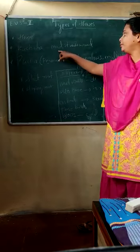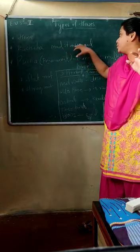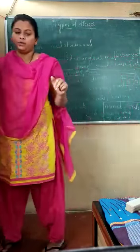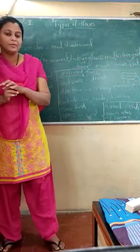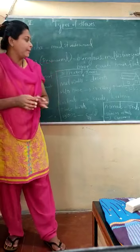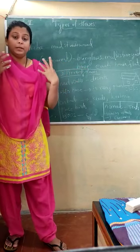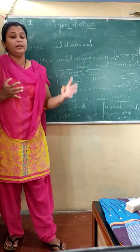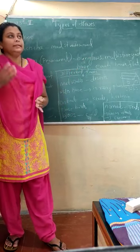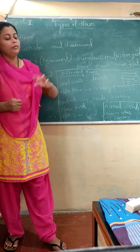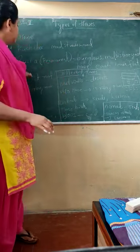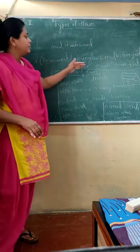Kaccha houses are not permanent — they are built using mud, straw, and wood. Next we have the pakka house. Pakka house means a permanent house. We can build it permanently using cement, bricks, and iron — you know, RCC buildings. These all come under pakka houses, and within pakka houses also we have some types.